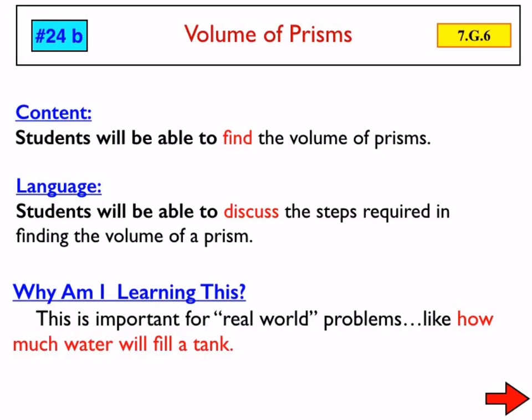Today we're going to really extend on an idea that you learned in 6th grade. We have to sort of undo that thinking, because of the way you probably learned it then. What I'm talking about is the idea of finding the volume of a rectangular prism.